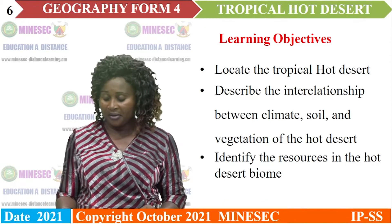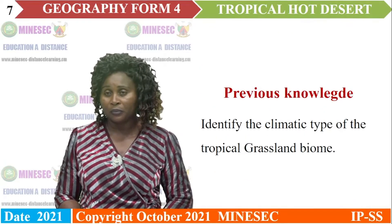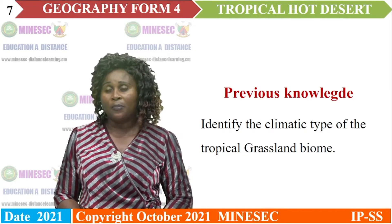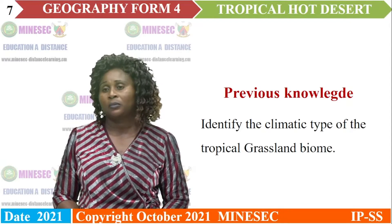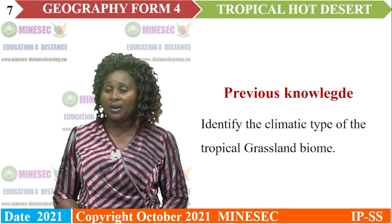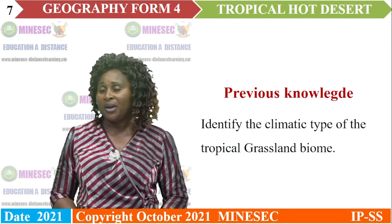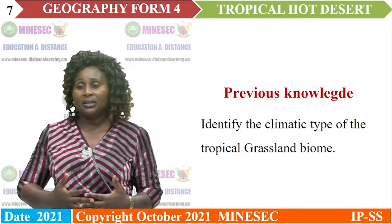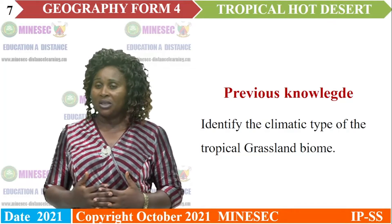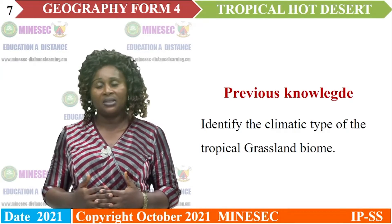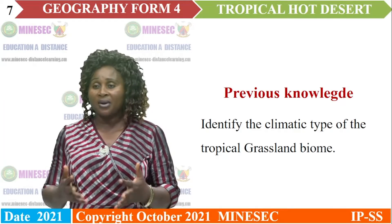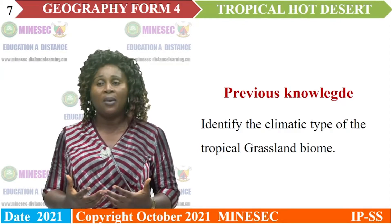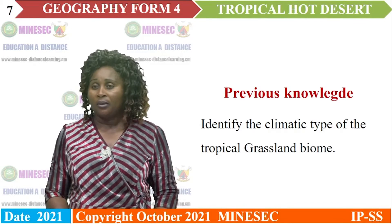In our previous lessons, we looked at the tropical monsoon zone biome and the tropical grassland biome, where we identified areas where these biomes are found, their climatic characteristics, soil type and characteristics, and the activities carried out in these areas. Let us refresh our memories with some questions.